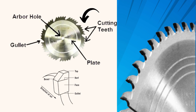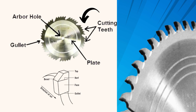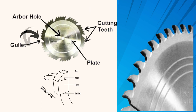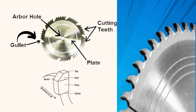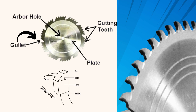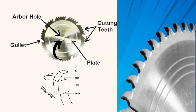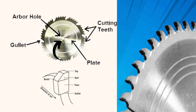Let's take a closer look at the components of a saw blade. The teeth are the cutting edges of the blade — their design and spacing determine the type of cut and the finish. The gullet is the space between the teeth, and its primary function is to provide a space for the removal of sawdust. Expansion slots are cuts made into the blade that help reduce vibrations and prevent the blade from warping due to heat. The arbor hole is the central hole in the blade where it's mounted to the saw.